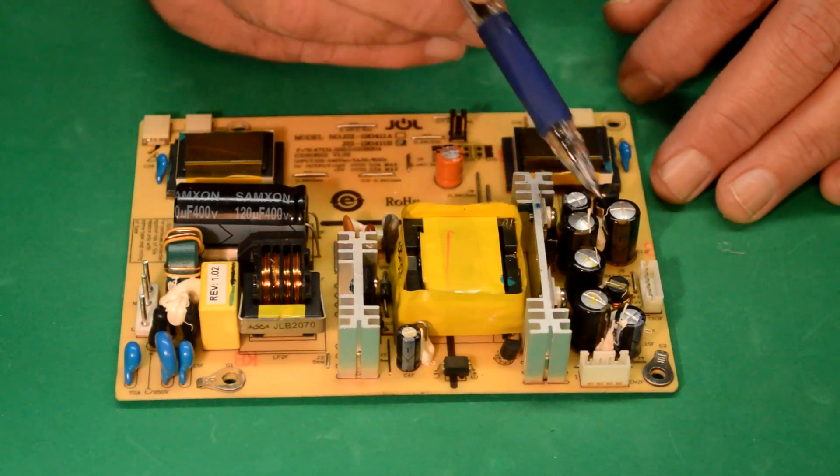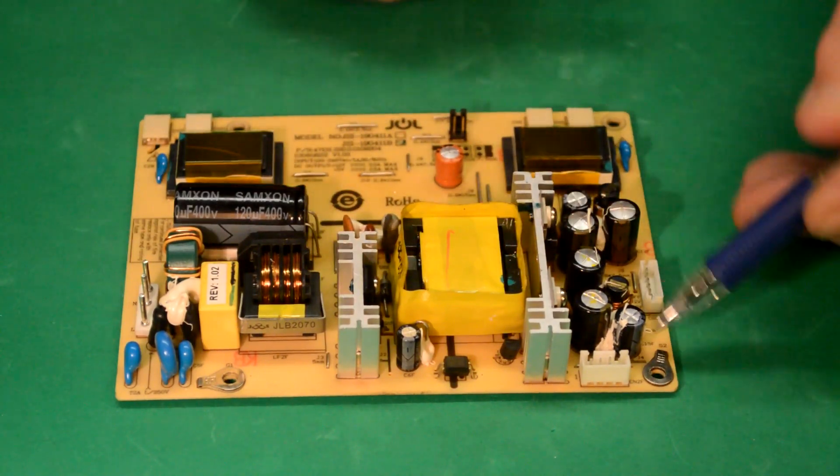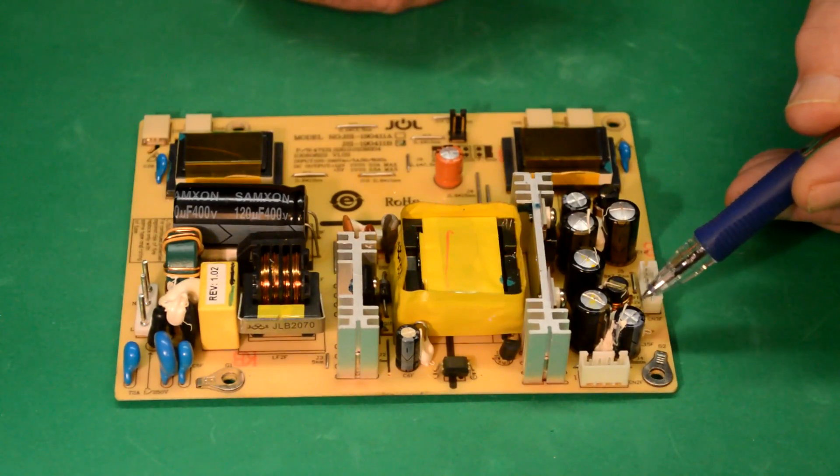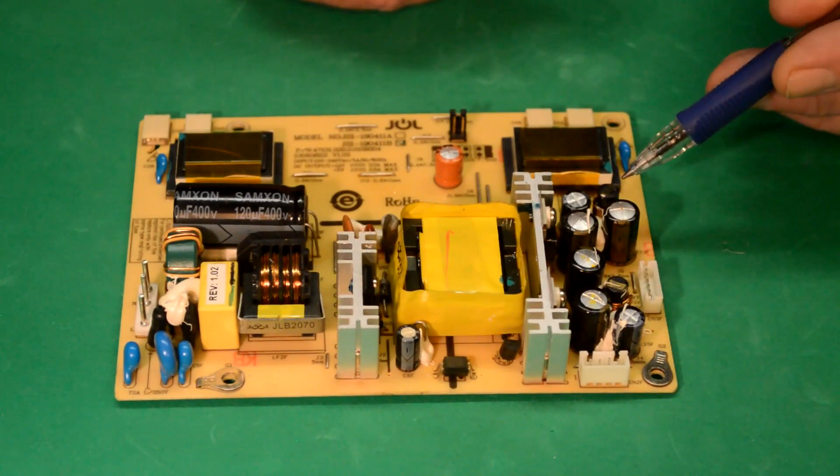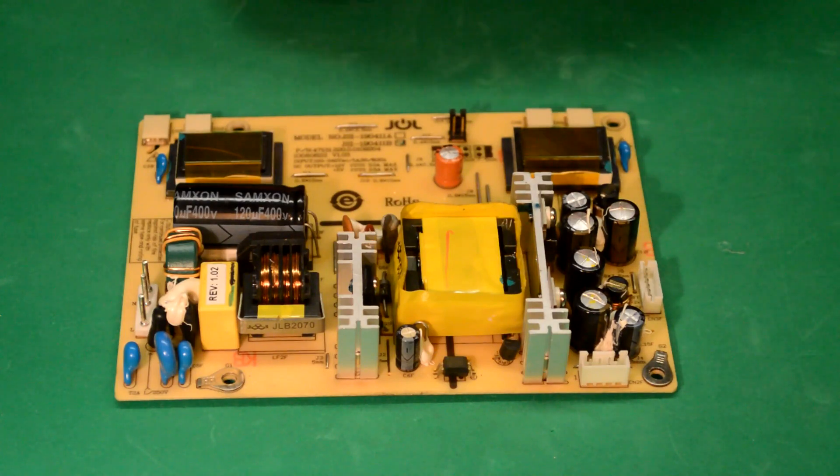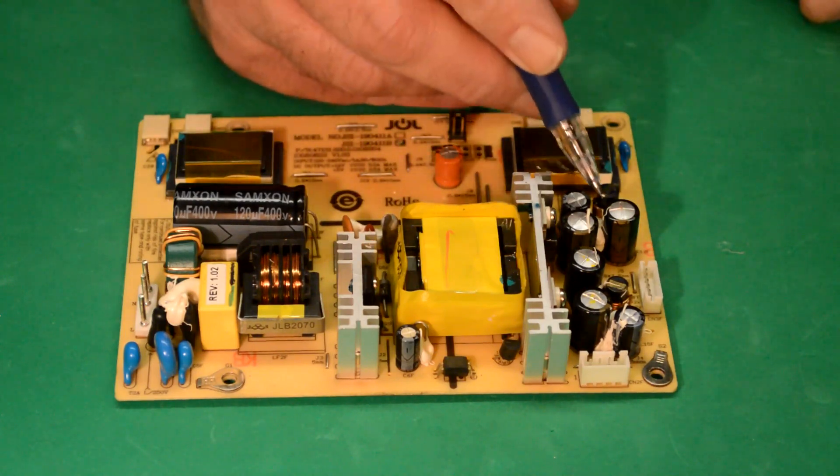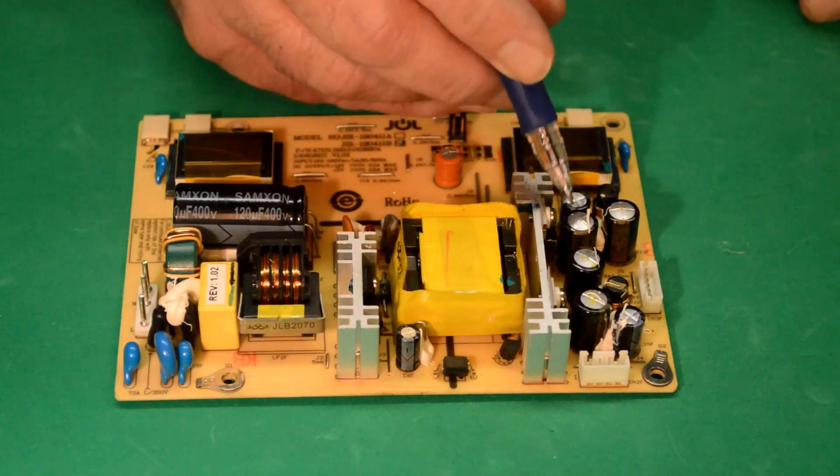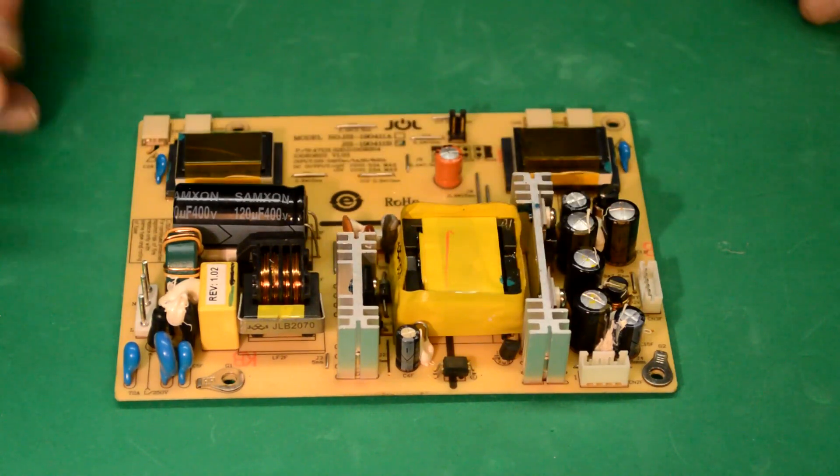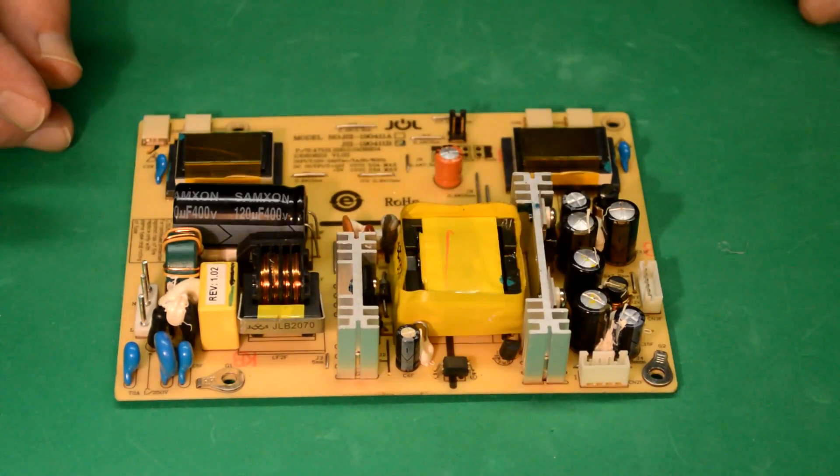Down in here, this white stuff, this is like a rubber silicone, and they typically put that around coils, and you can see it's surrounding these two coils here. Anyway, we're going to have to take a knife and try to trim that out of there before we can get these caps out of there, which makes it an extra pain.